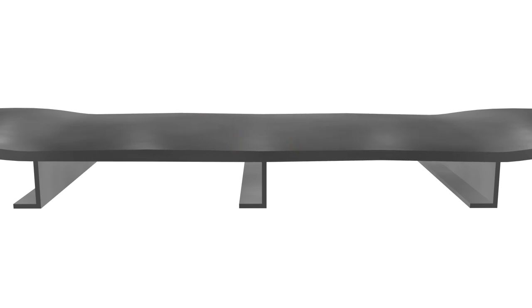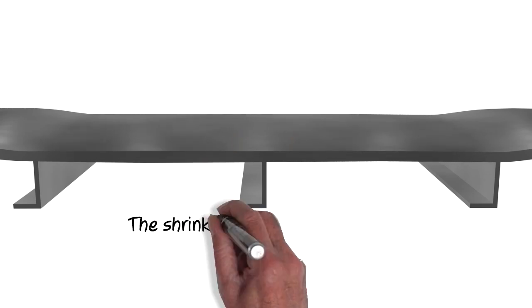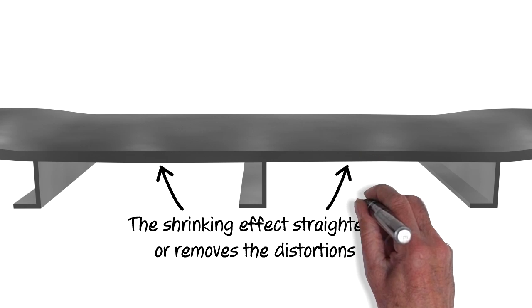When the workpiece cools down to an ambient temperature, it has a shrinking effect that straightens and removes the angular distortion.